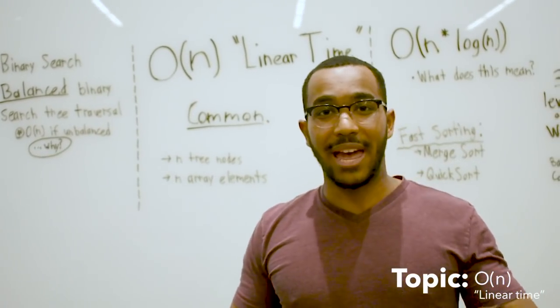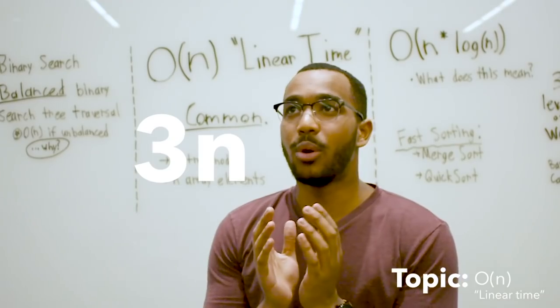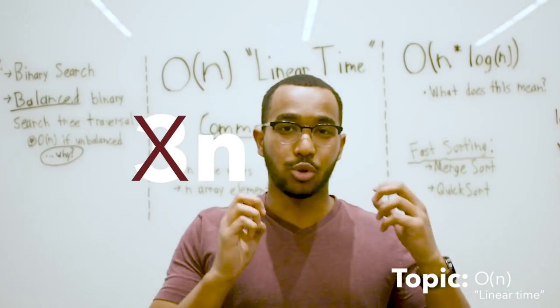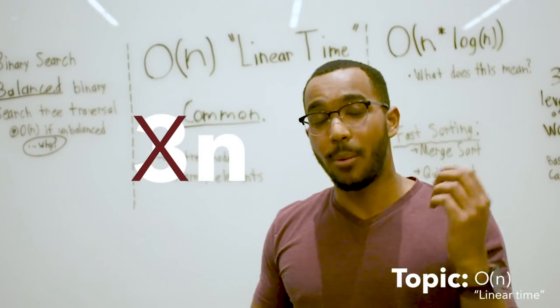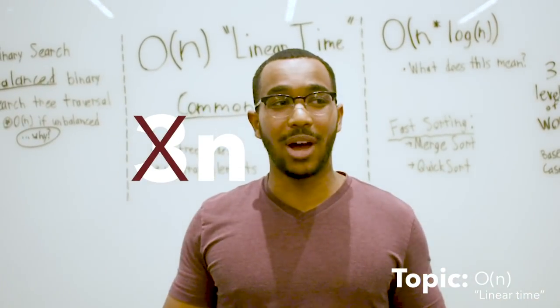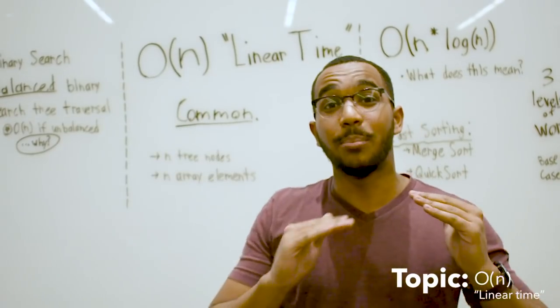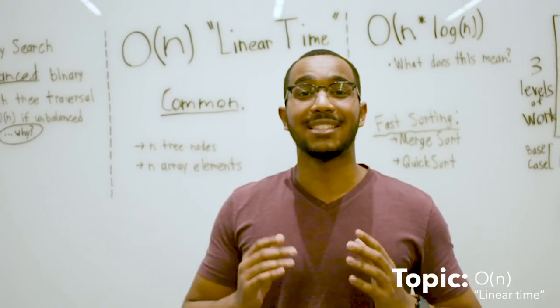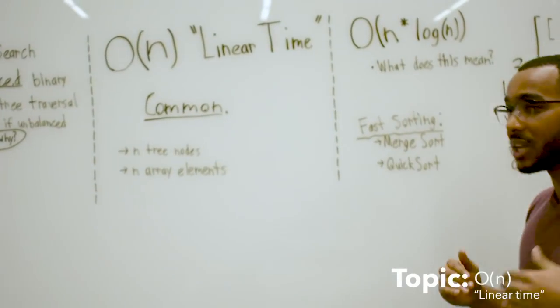Even if you're doing multiple passes over an array, you're going to be doing 2n, 3n. But we don't care about the constants. This is why we drop the constants in big O notation. Big O 3n is the same thing as big O n because we care about the behavior. The only thing a constant does is make that line steeper.